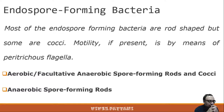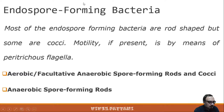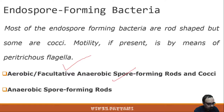Most of the endospore-forming bacteria are rod-shaped, but some of them are also cocci, and motility is by means of peritrichous flagella. They are divided into two groups: aerobic or facultative anaerobic spore-forming rods and cocci, and the second group is anaerobic spore-forming rods.